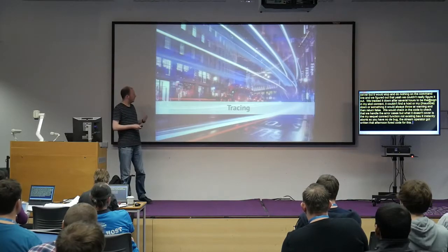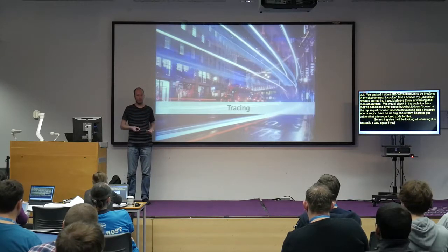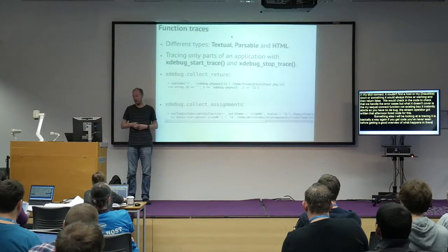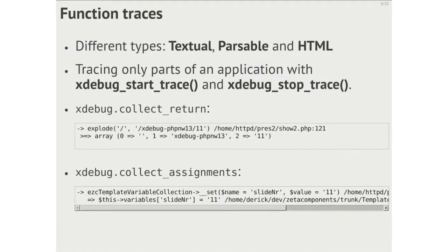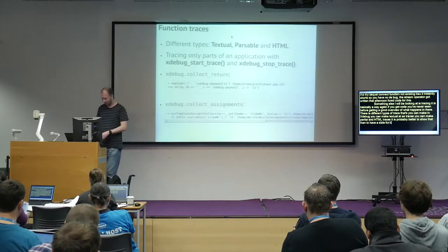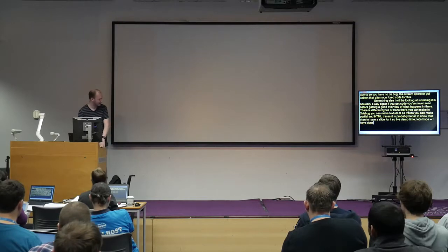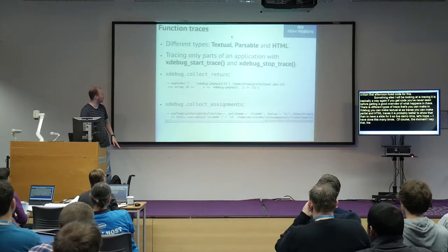Tracing is basically a way — if you get code you've never seen before — to get a good overview of what happens. There are different types of traces in Xdebug: textual traces, parsable traces, and HTML traces. It's probably better to show that than have a slide for it, so live demo time. I've done this many times — of course the moment I say that the cable falls out of the projector.